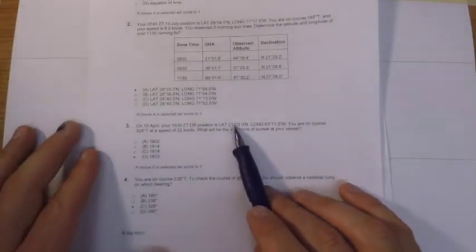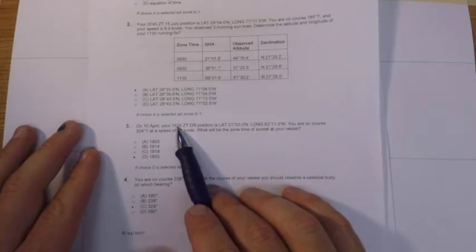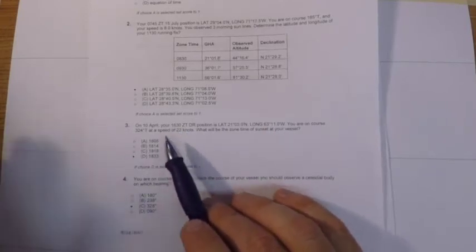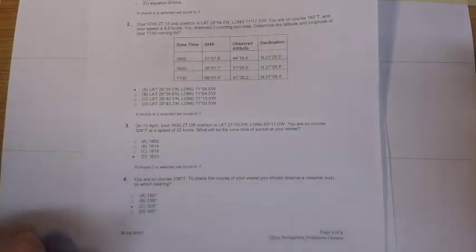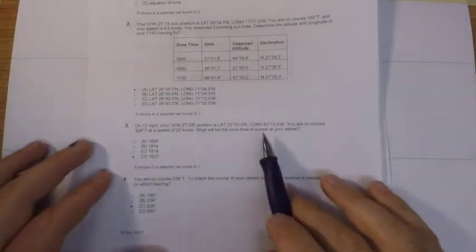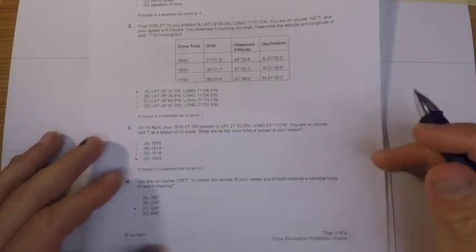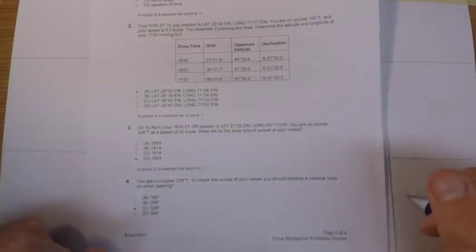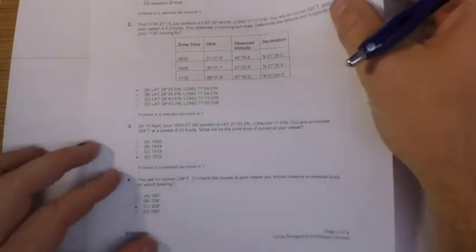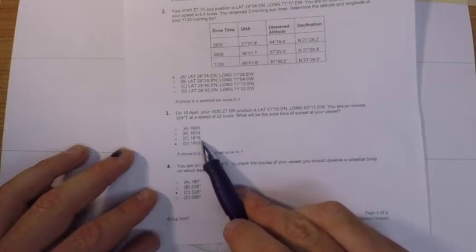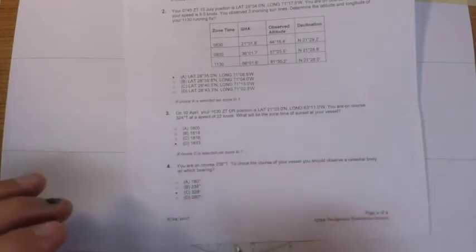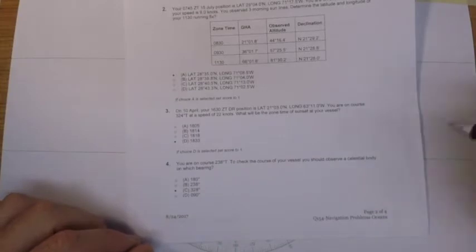Now here's a quick note: obviously you cannot just calculate sunset for this position because it's from 1630 and you're transiting for another at least couple hours until sunset. So you're going to be 20 to 40 miles away from where your original DR position was. But it also does not say what is the zone time of sunset by second estimate, and when they say second estimate that's asking us to do pretty much three iterations of calculation of sunset. Looking at the answers, we're spread out by about four or more minutes in every case, so we don't need to be super precise, but we do need to take into account the distance we'll travel.